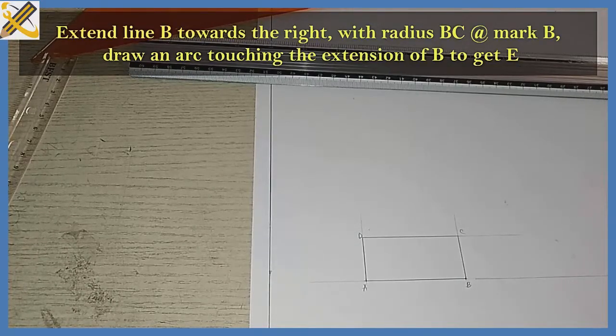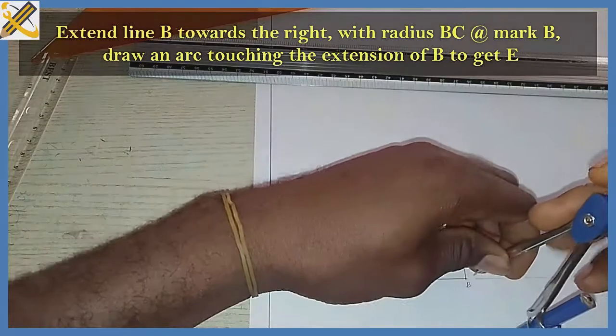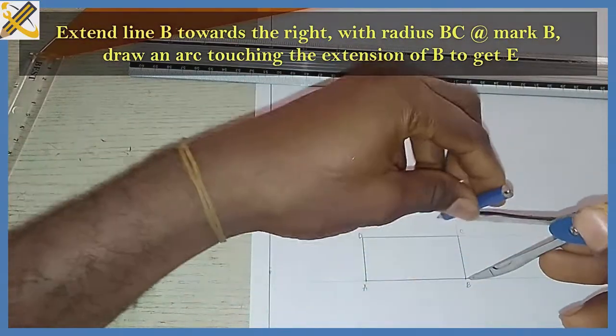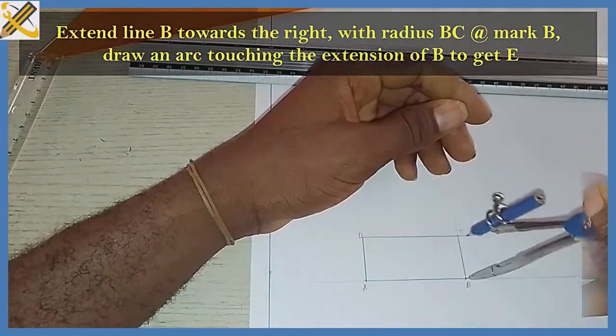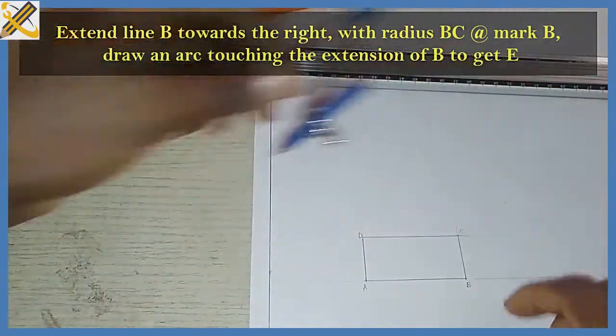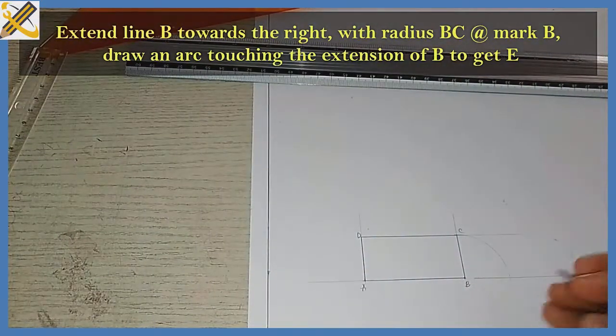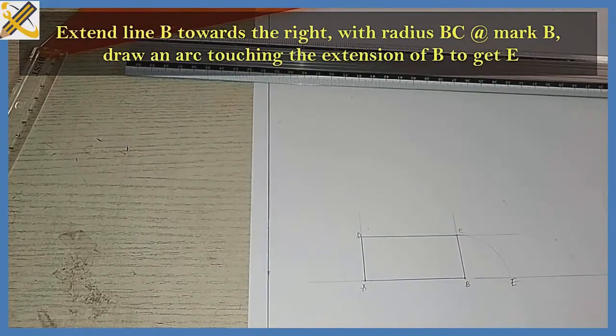Then after doing that, with your compass, pick radius BC with center B and draw an arc. So wherever you strike this area, that's point E.